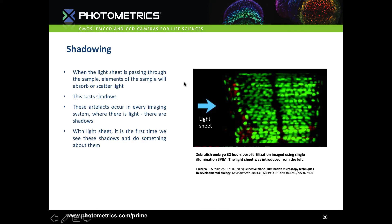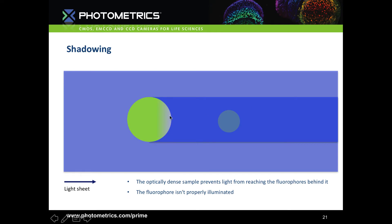Another notable issue is shadowing. Because where there is light, there are shadows. In this image of a zebrafish embryo, the lightsheet coming from the left creates shadows stretching across the image where it hits more optically dense structures, meaning parts of the sample within the shadow aren't properly illuminated. The lightsheet hits an optically dense part of the sample casting a shadow behind it, and the fluorophore hidden there gets less illumination.